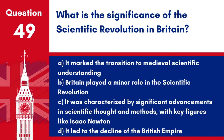Question 49: What is the significance of the scientific revolution in Britain? a. It marked the transition to medieval scientific understanding. b. Britain played a minor role in the scientific revolution. c. It was characterized by significant advancements in scientific thought and methods, with key figures like Isaac Newton. d. It led to the decline of the British Empire. Answer: c. The scientific revolution in Britain was a period of major advances in the sciences, contributing to the foundation of modern scientific knowledge.